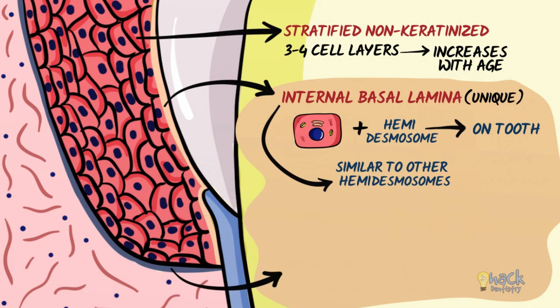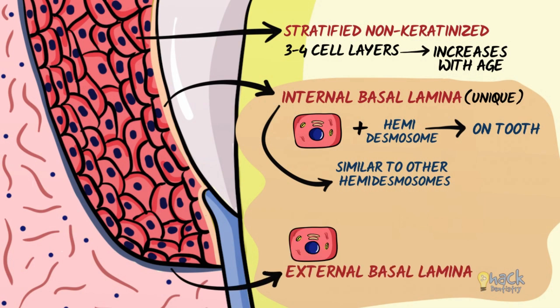It also has an external basal lamina, where cells in the stratum basale of the junctional epithelium attach to the underlying connective tissue with hemidesmosomes.